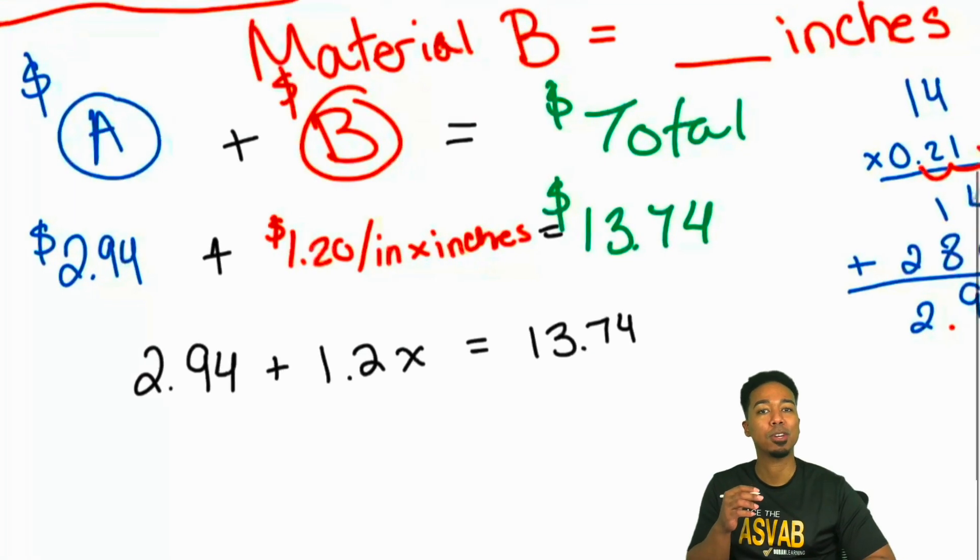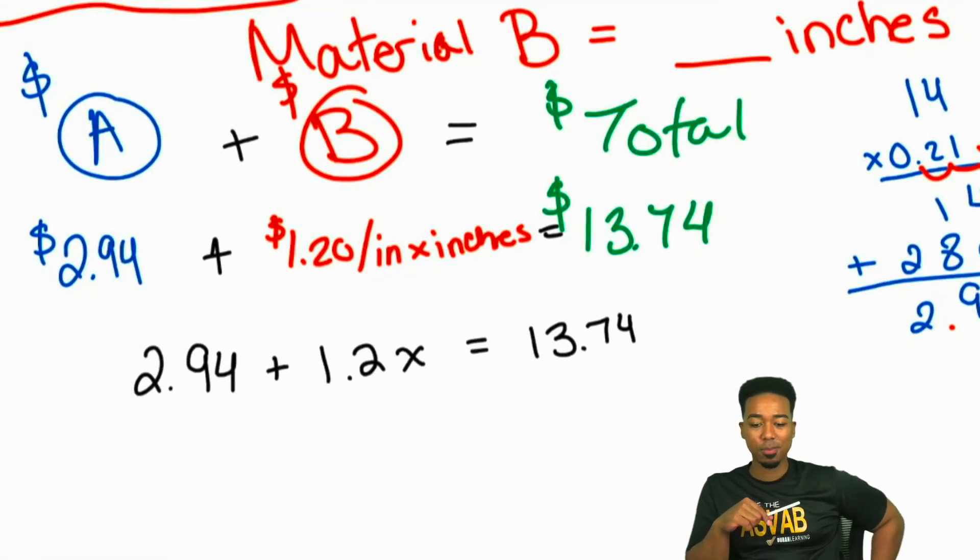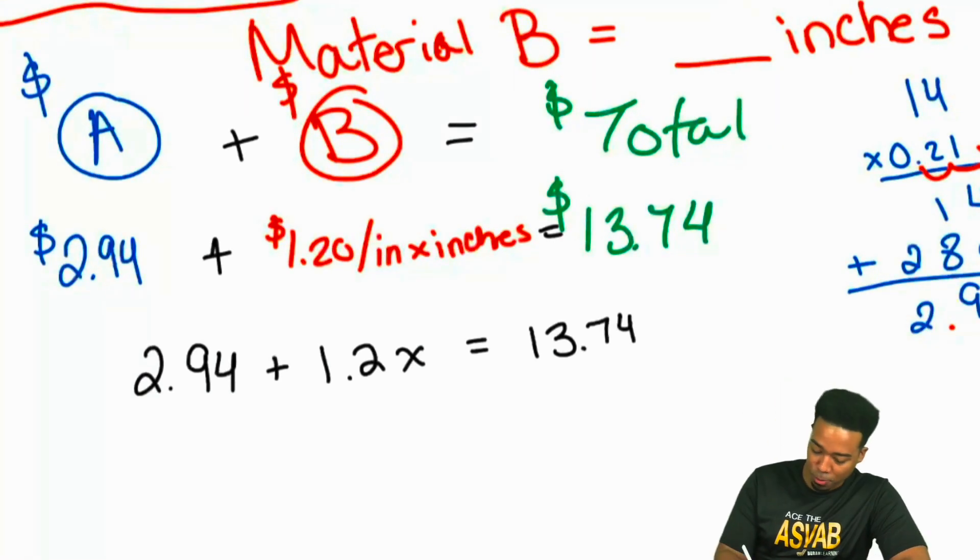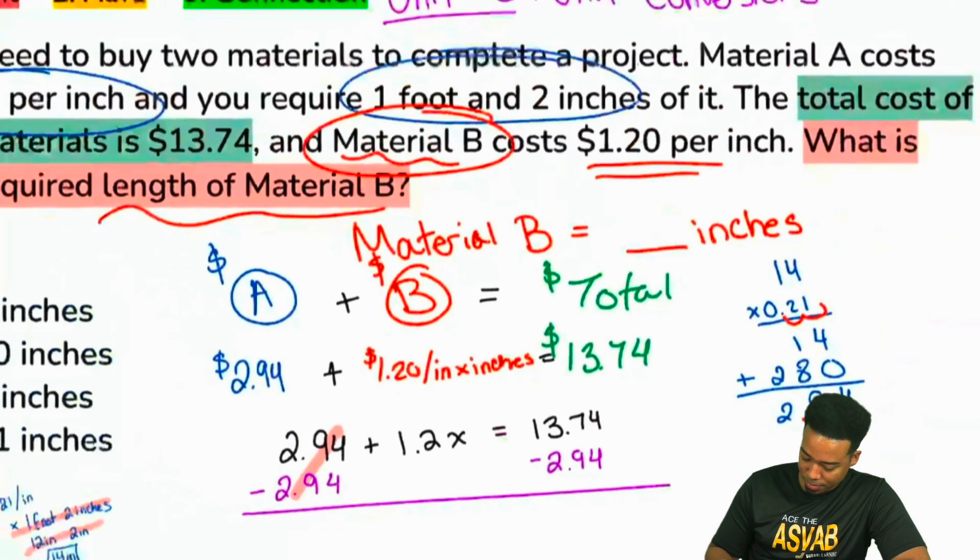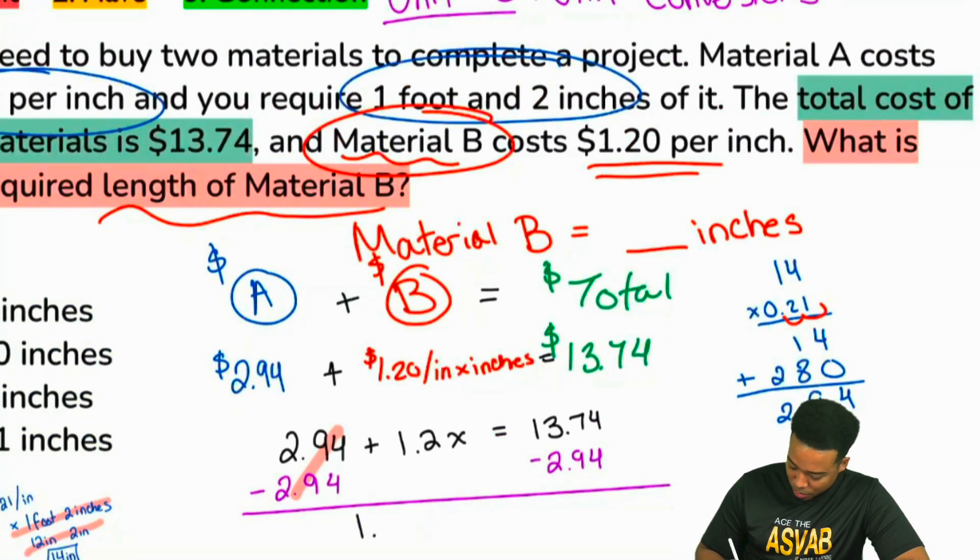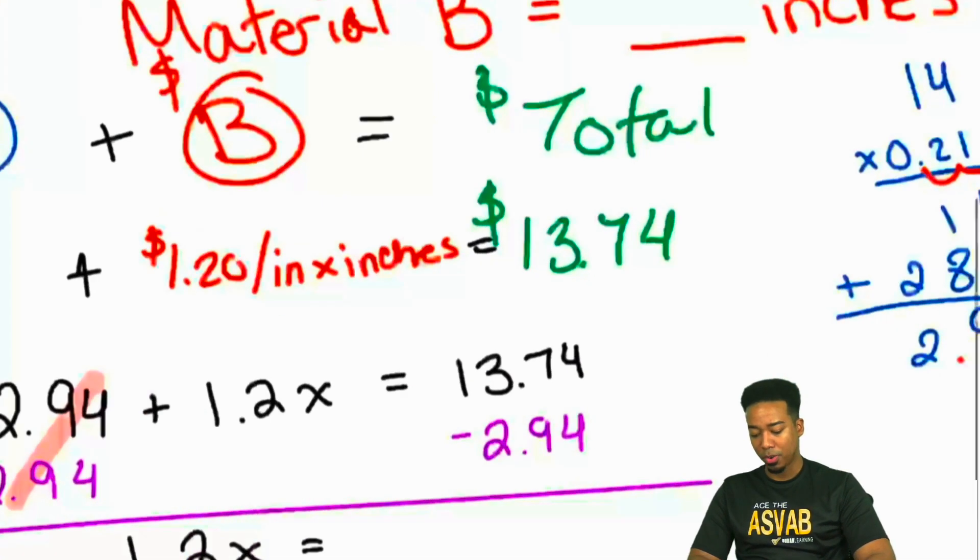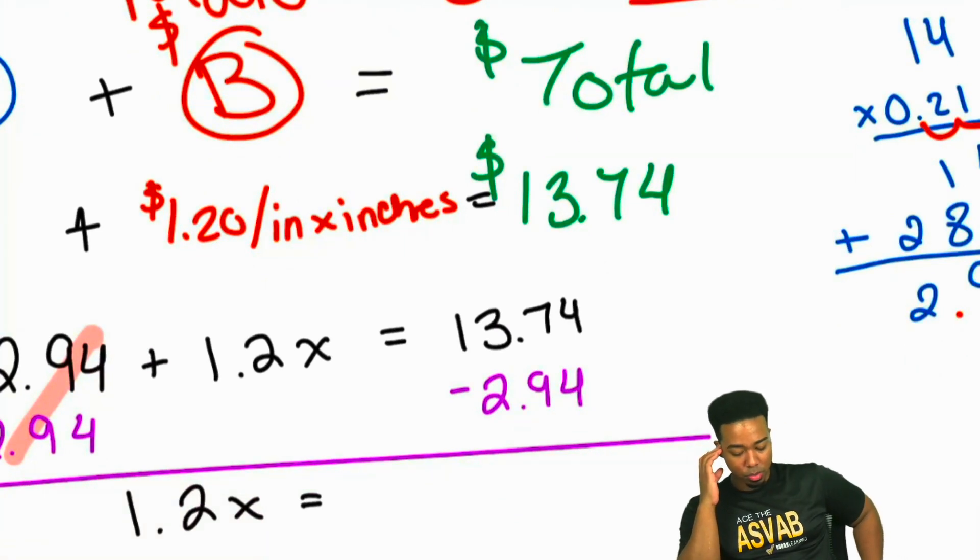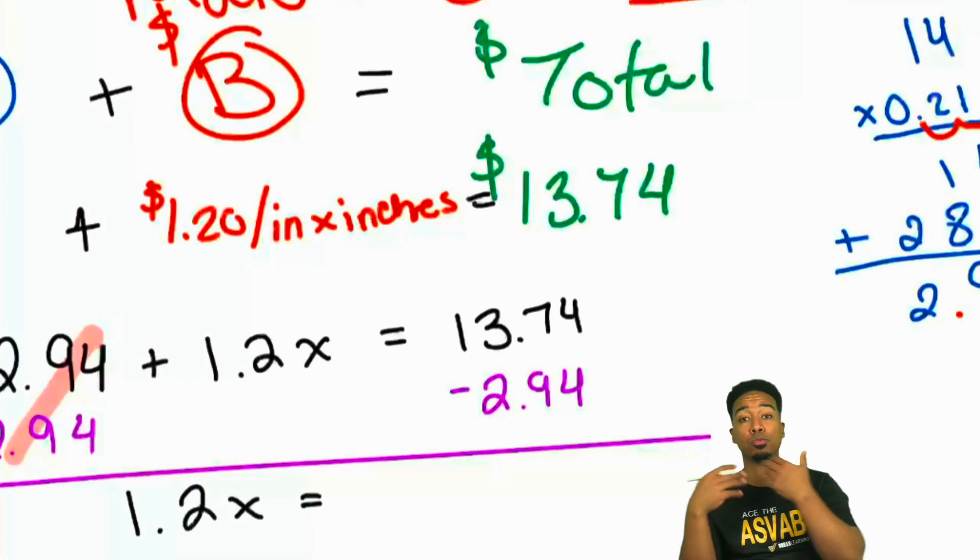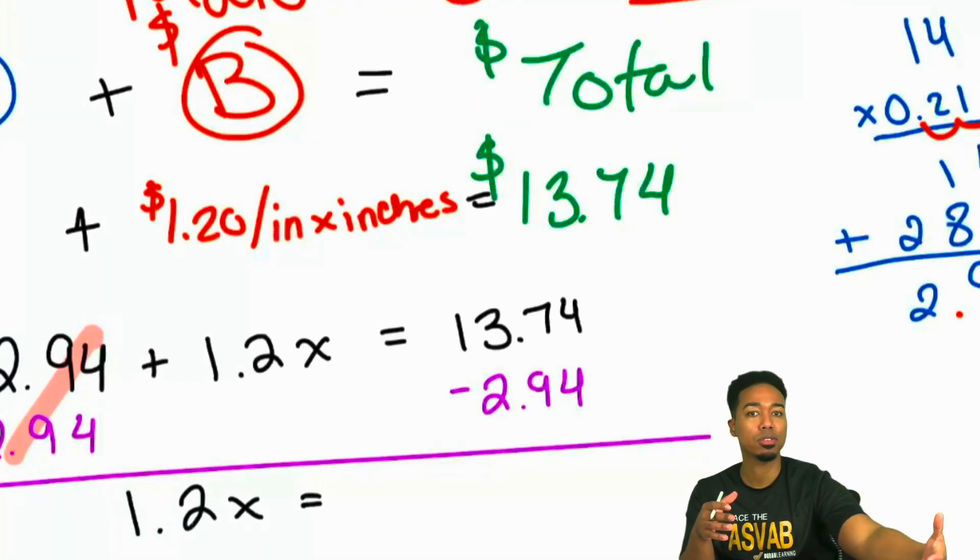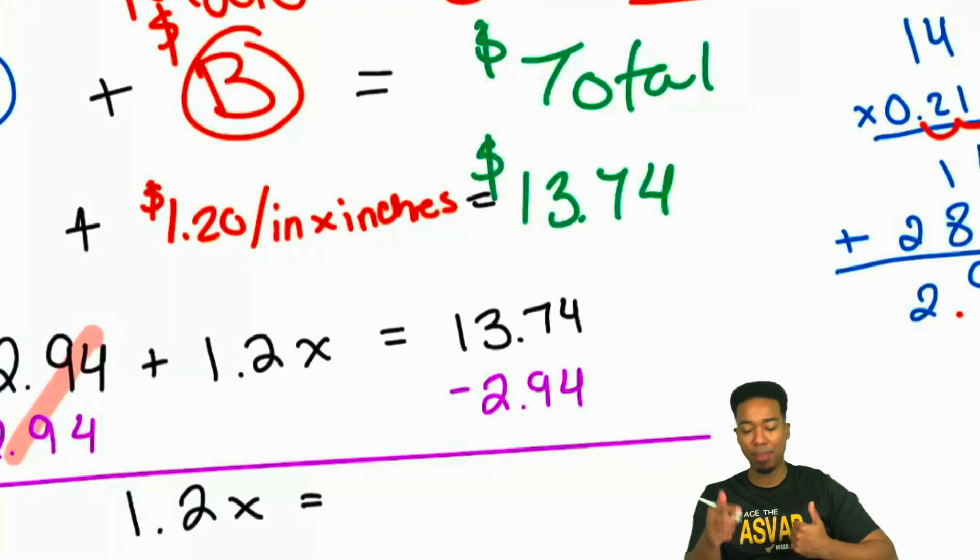And now that we have this, we can solve this. Everyone, what's our first step going to be? Right, we'll subtract the 2.94 on both sides. So that's going to cancel here on the left. And so what we'll have on the right side, 1.2X equals... If you're having a little bit of some doubts in terms of how do I subtract 2.94 from this, you could just subtract $3 and then add the 6 cents back. Because if you subtract $3, you subtracted 6 cents more than we should have, so you can just add the 6 cents back.